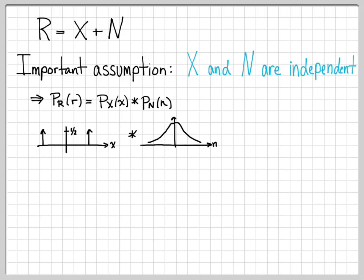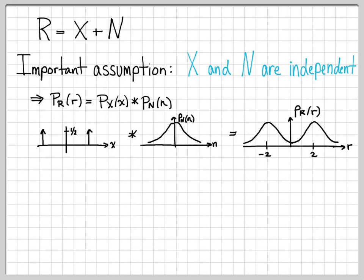Remember that P_X(x) consists of just two impulse points on the real axis at plus and minus 2. That quantity is what we're going to convolve with our Gaussian. This is actually very easy: convolving with an impulse function simply places the underlying shape at that point on the axis. So after the convolution, we get a Gaussian curve shifted to minus 2 and another Gaussian shifted to positive 2. This is the probability density function we're looking for.